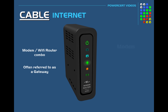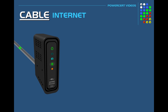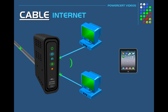This gateway device is a modem with a built-in switch and Wi-Fi router all in one. When you receive this modem from your ISP, you attach a coaxial cable that's routed into your home to the back of the device. The modem brings the internet into your home, and the switch and Wi-Fi router allow you to connect multiple wired and wireless devices — such as computers, laptops, and tablets — to give them internet access.